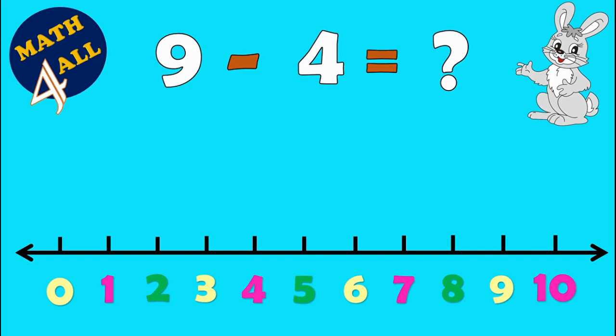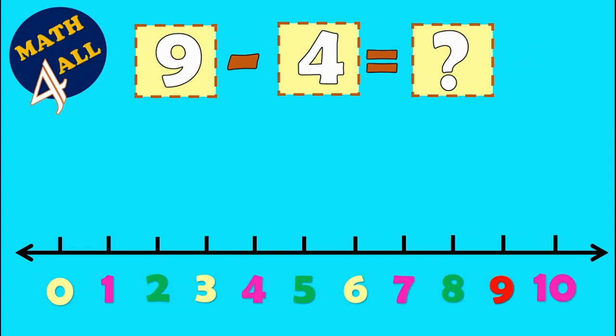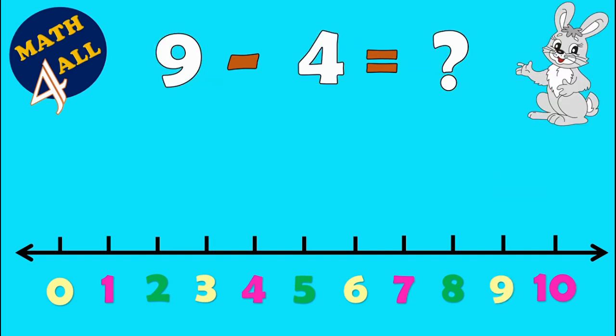Okay, let's move on to our next problem. Here we have 9 minus 4 equals what, or 9 take away 4. We will stop on the biggest number, it's 9. Then we will jump 4 jumps.